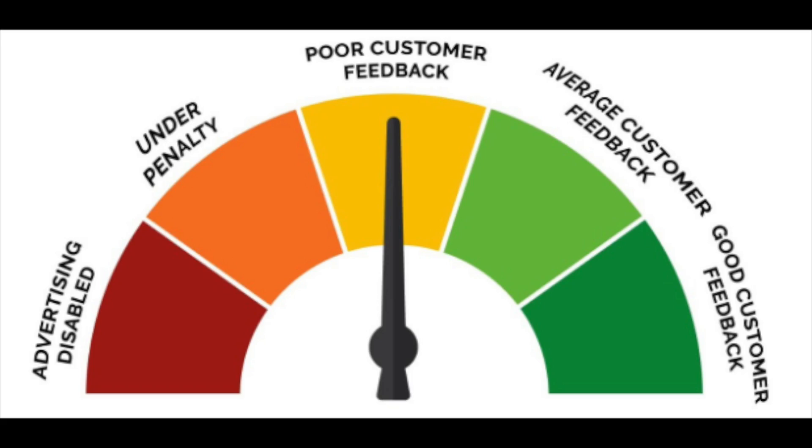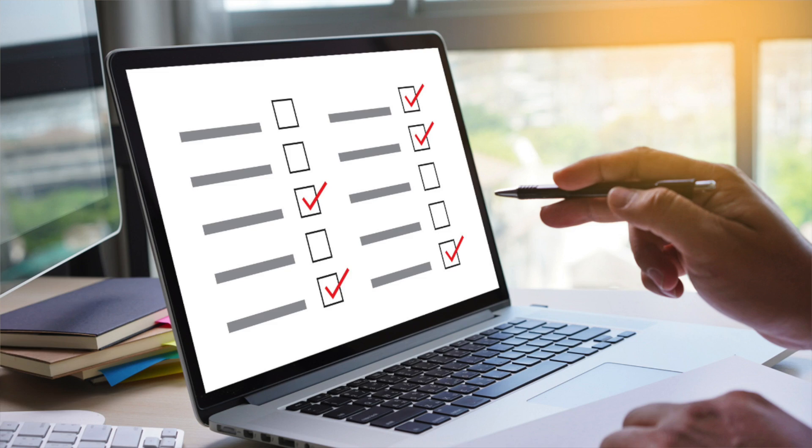The customer feedback score is a score between zero and five, decided by Facebook, that determines your overall Facebook page's advertising quality. Facebook uses a variety of information including surveys from people who purchase through Facebook, Instagram, and Facebook Audience Network ads, to help ensure that ads accurately represent the product and service provided.